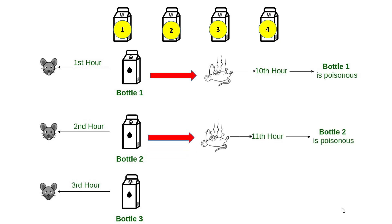If rat dies after 11 hours, second bottle contains poison, because second bottle was fed to the rat at the start of second hour. 1 plus 10 is 11. Hence, if rat dies after 11 hours, second bottle is poisonous.